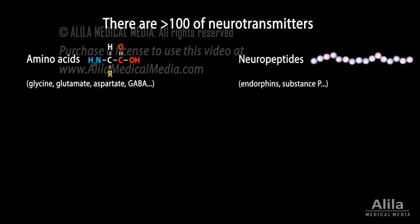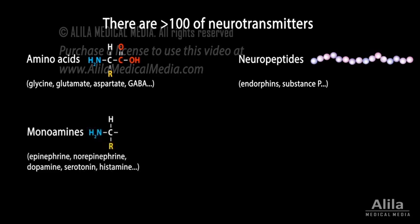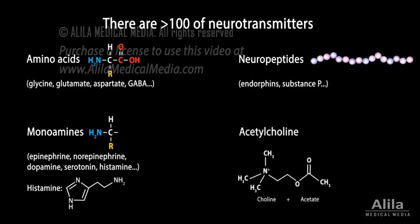Small peptides, called neuropeptides, such as beta-endorphin and substance P. Monoamines, such as epinephrine, norepinephrine, dopamine, serotonin, and histamine. Monoamines are basically amino acids with the acid group removed. Acetylcholine, an ester of choline, is in its own class by itself.